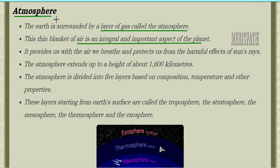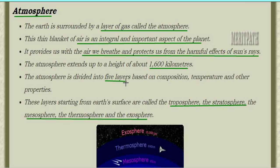Next comes atmosphere. Atmosphere means earth is surrounded by a layer of gas all over it. This layer of gas, air, is known as the atmosphere. This blanket of air is an important and integral aspect of the planet because air protects us from the sun's harmful rays and also gives us air to breathe. The atmosphere extends up to a height of 1600 kilometers.